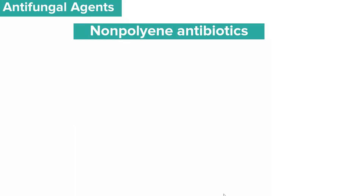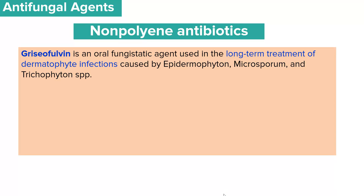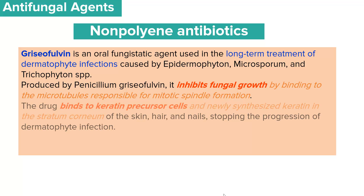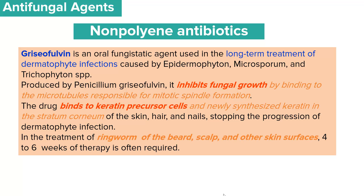Another class of antifungal agents is the non-polyene antibiotics, the most common example being griseofulvin. Griseofulvin is an oral fungistatic agent commonly used in the long-term treatment of dermatophyte infections caused by epidermophyton, microsporum, and trichophyton species. It is produced by Penicillium griseofulvum, and works by inhibiting fungal growth through binding to microtubules responsible for mitotic spindle formation in fungal cells. Griseofulvin also binds to keratin precursor cells, and newly synthesized keratin in the stratum corneum of skin, hair, and nails, thereby stopping the progression of dermatophyte infection. For ringworm of the beard, scalp, and other skin infections, a four to six week dose of griseofulvin is used.